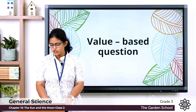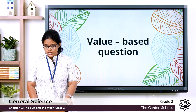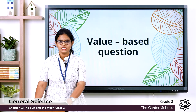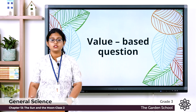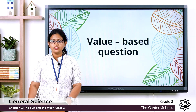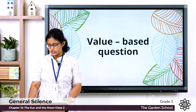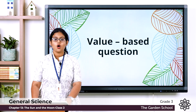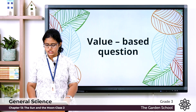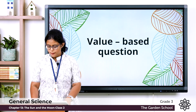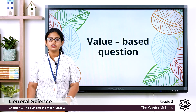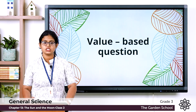Moving to the value-based questions. Read the passage and answer the following questions. The passage reads: the earth is neither very close nor very far from the sun. It is therefore neither a hot nor a cold planet. This is one of the reasons that supports life on the earth. Besides warmth, living things need air, water, and sunlight to live.